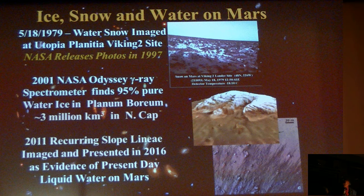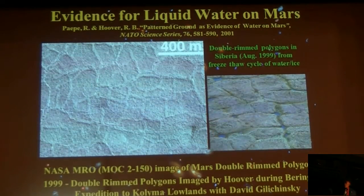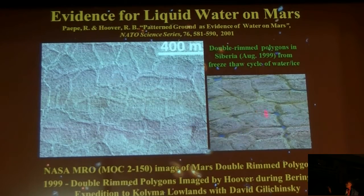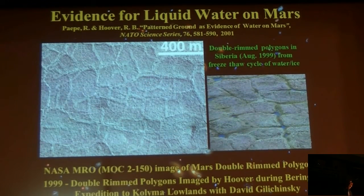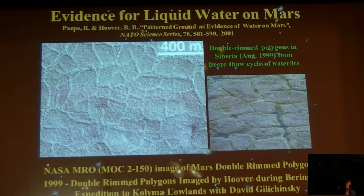Just recently, NASA announced that the recurring slope lineae, which was actually imaged in 2011, provided evidence of present-day liquid water on Mars. Years ago, I went with David Gilichinsky to the Kolyma Lowlands of North Siberia, and as we were flying back I got a beautiful photograph of patterned ground showing double-rimmed polygons. We obtained images of double-rimmed polygons on Mars — those familiar with permafrost know this is associated with freezing and thawing of ice, and once you thaw the ice you have liquid water. That provided evidence of liquid water on Mars, and that image was obtained back in 1999.